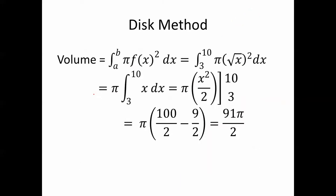So we have the integral from 3 to 10 of pi f of x squared — in other words, pi times x squared dx. We can pull the pi to the outside, since pi is a constant. Pi times the integral from 3 to 10 of x dx, which gives us pi times x squared over 2 as x goes from 3 to 10. Plugging in 10 gives pi times 100 halves; plugging in 3 gives pi times 9 halves. So we end up with pi times 100 halves minus 9 halves, which is 91 pi over 2.